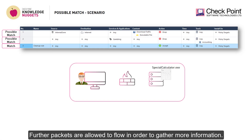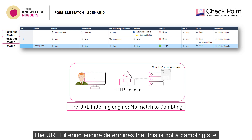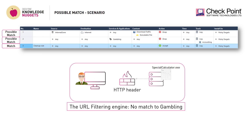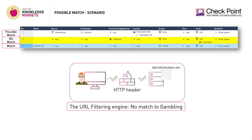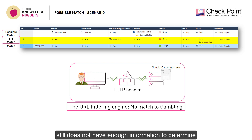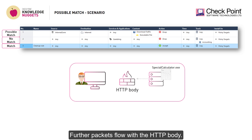Further packets are allowed to flow in order to gather more information. The HTTP header arrives and the gateway turns on inspection engines to examine the content in the connection. The URL filtering engine determines that this is not a gambling site. Therefore, for Rule 2, the status of the rule is no match. The Content Awareness engine still does not have enough information to determine if James is trying to reach an executable file. Therefore, Rule 1 remains a possible match.